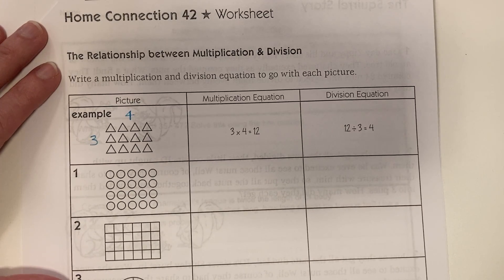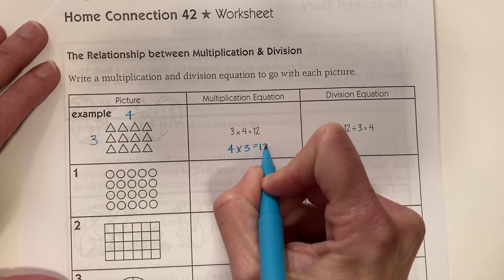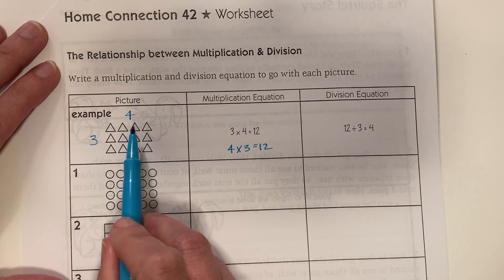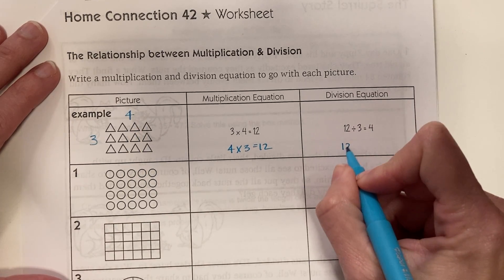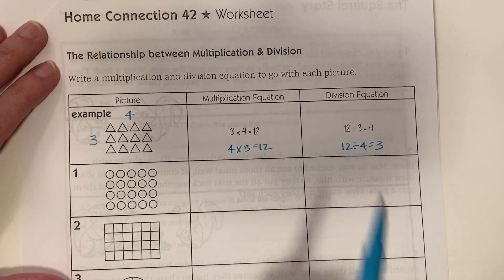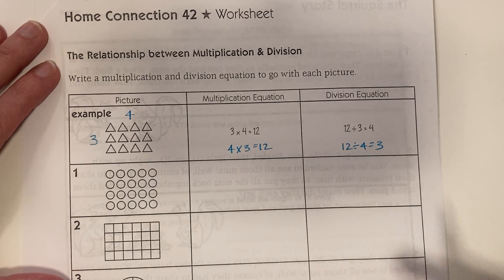Now it would be totally fine if you chose to write 4 times 3 equals 12. That's also correct because multiplication is commutative. You could also do 12 divided by 4 equals 3. The 12 would have to go first but other than that you can definitely switch it around. Both answers are correct.